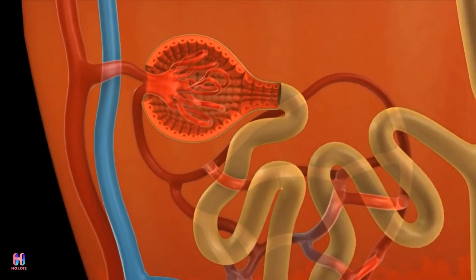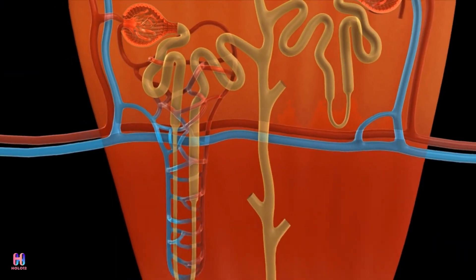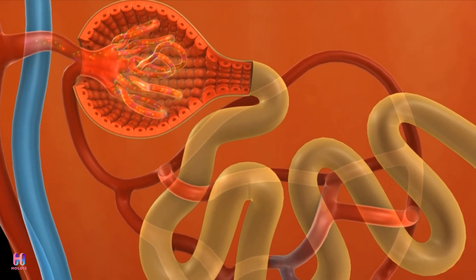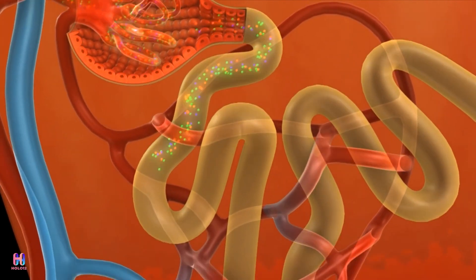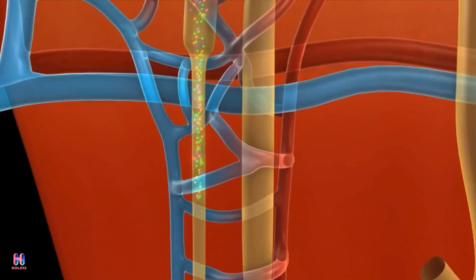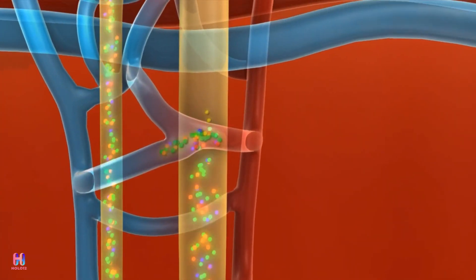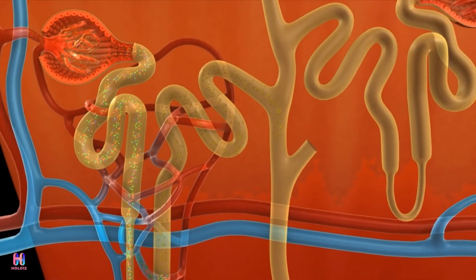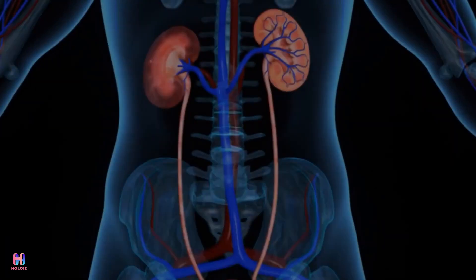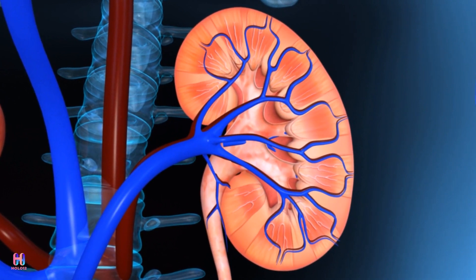The narrow glomeruli ensure that larger molecules like proteins and red blood cells are not filtered out of the blood and stay in the blood vessel. The waste materials that are filtered out move through the glomeruli and into a tubular structure known as the tubule. Running alongside the tubule is a blood vessel where water is reabsorbed, along with other useful minerals and nutrients such as glucose that were small enough to be filtered. Anything left in the tubule becomes urine.